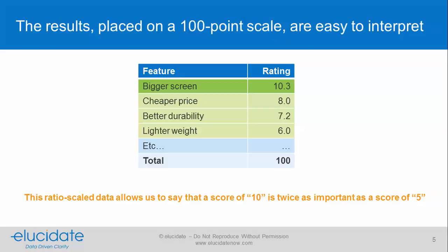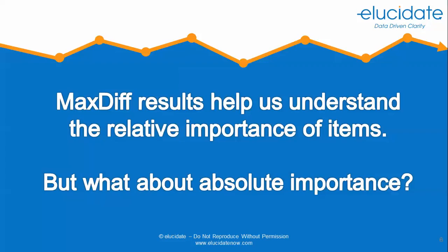The results get placed on a 100-point scale and they're very easy to interpret. This is ratio-scaled data, which allows us to say that a score of 10 is twice as important as a score of 5. So MaxDiff helps us understand the relative importance of items — it does that very well.